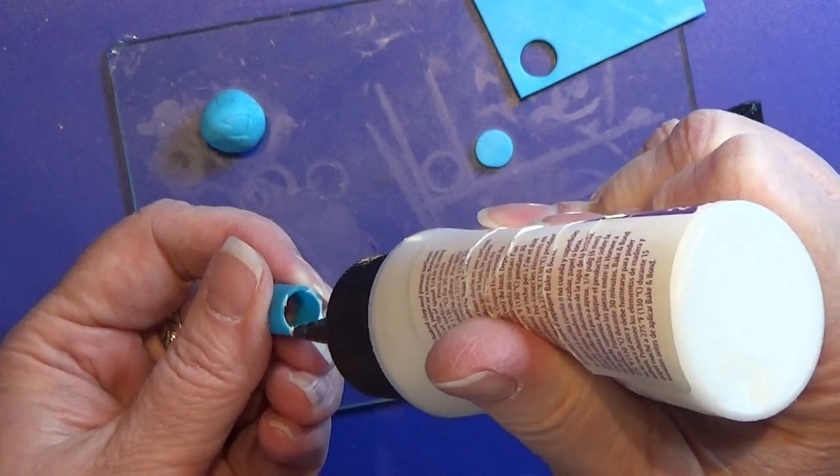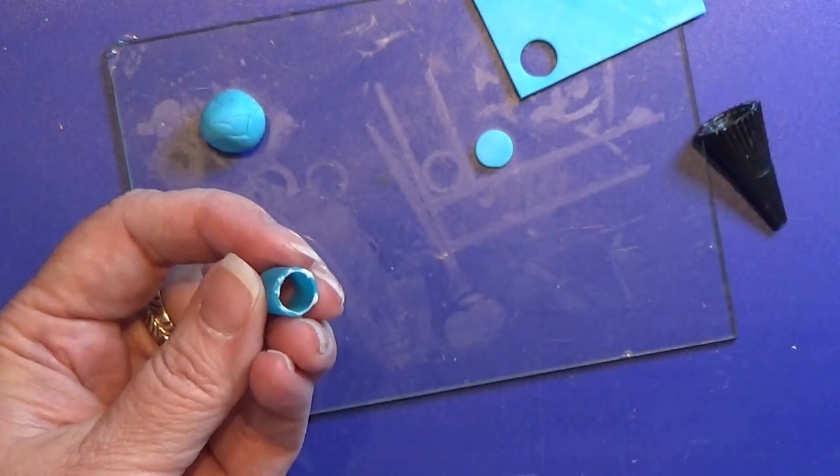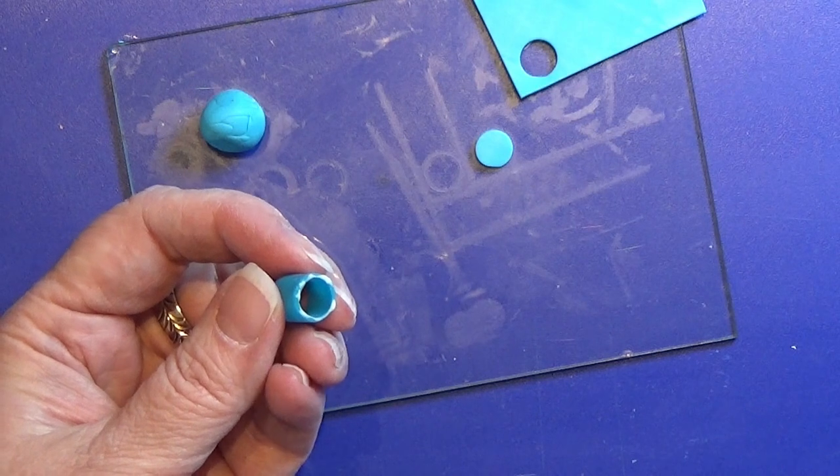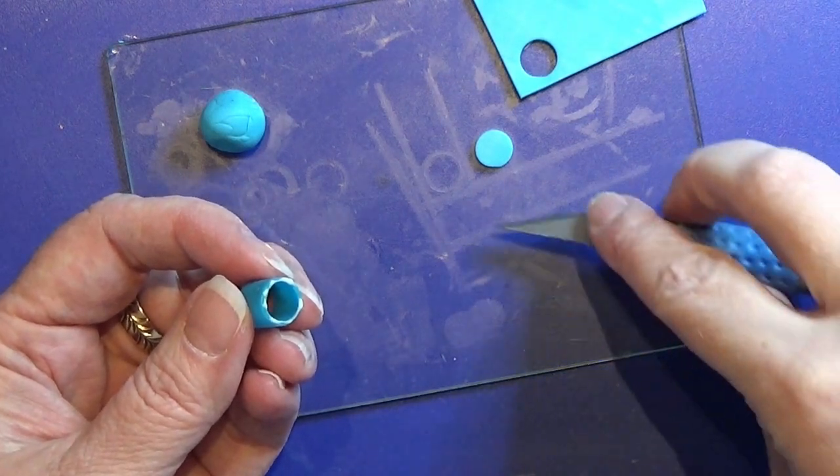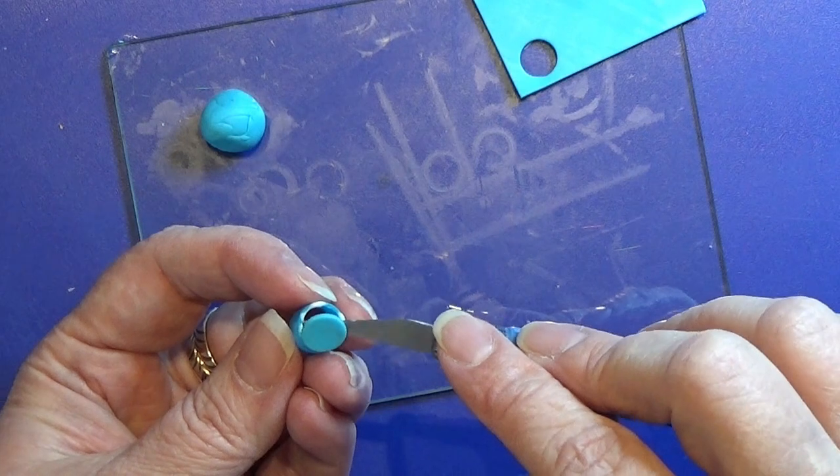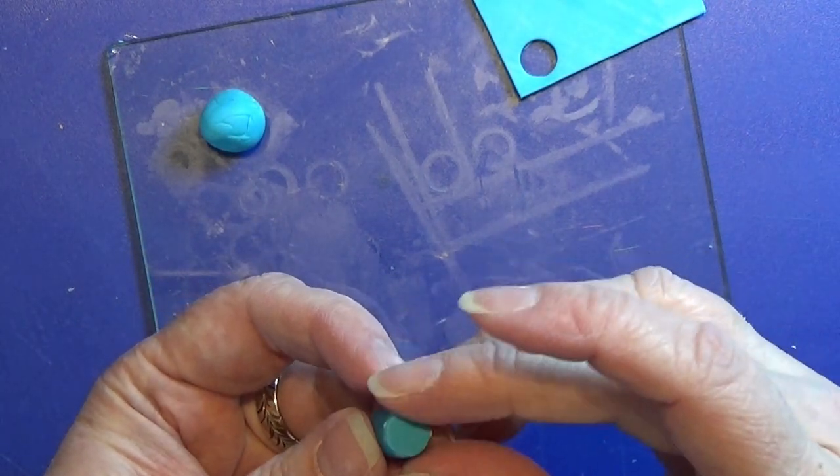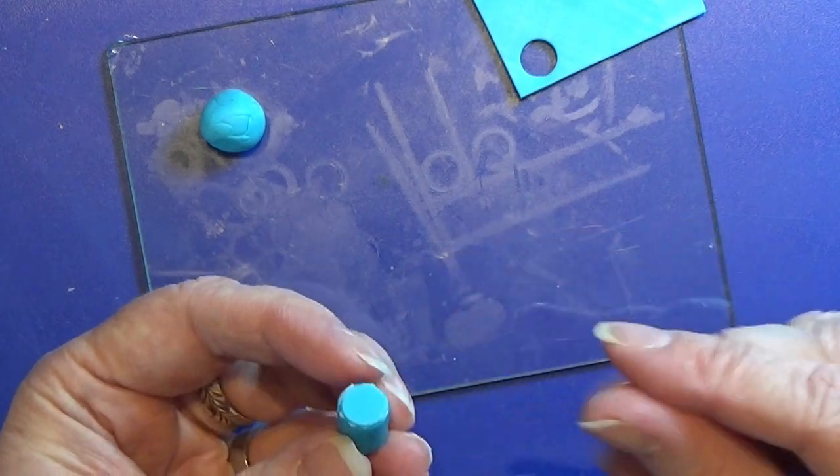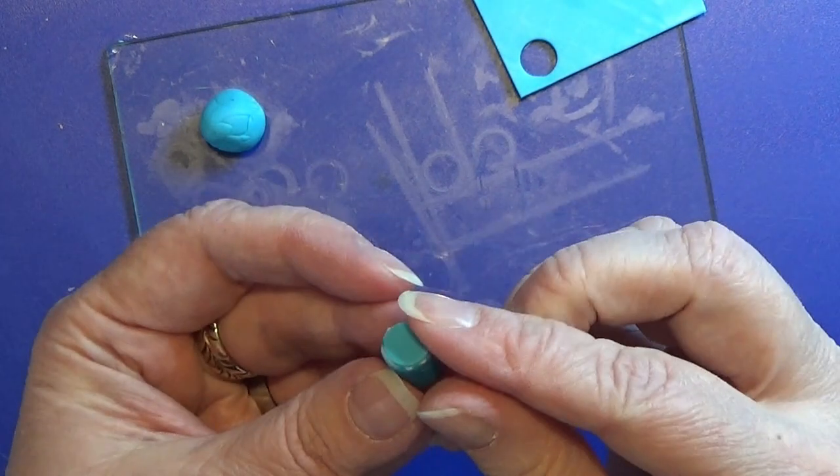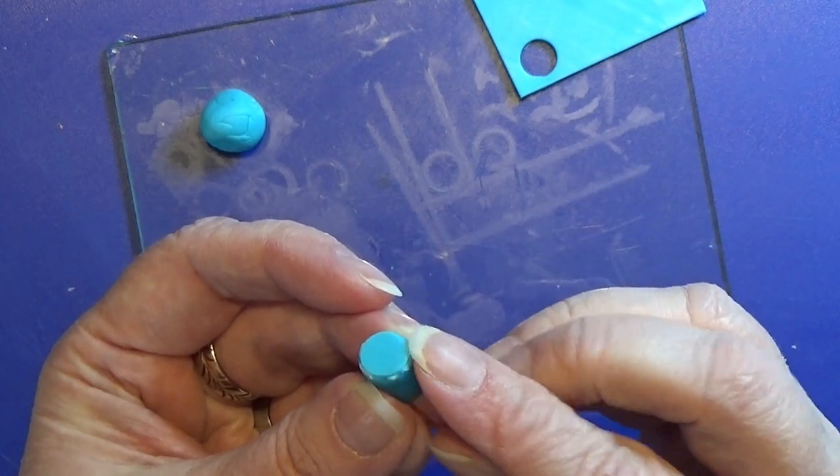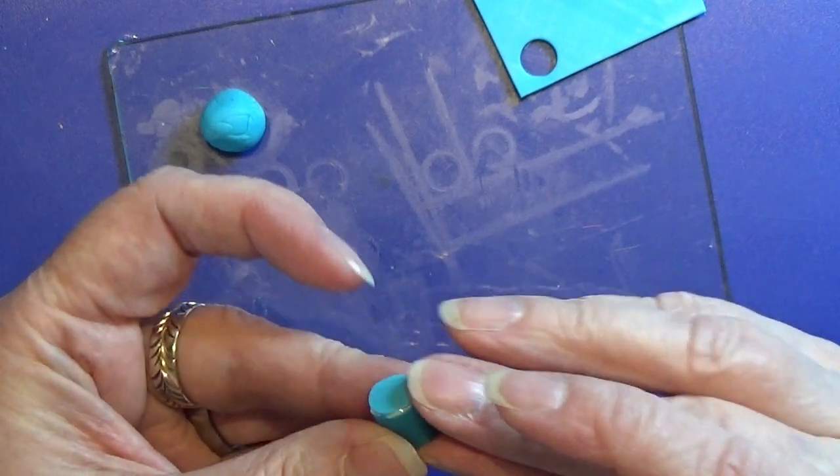I place a tiny bit of bake and bond on the bottom of this tube or bucket, then I'm going to place this circle that we just cut out and smooth out the connections. Bake this part again.